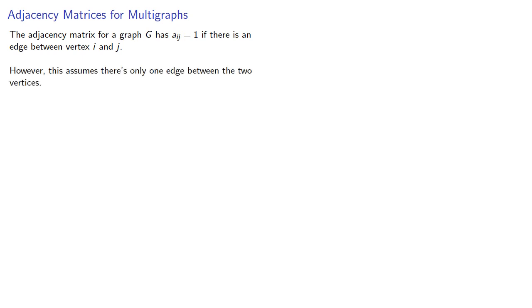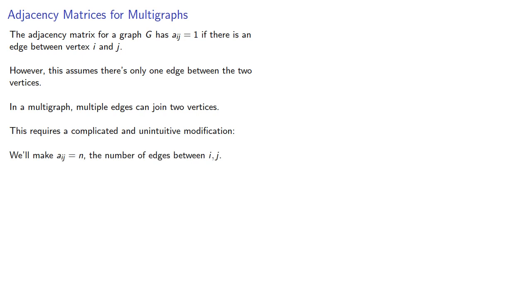However, this assumes there is only one edge between the two vertices. In a multigraph, multiple edges can join two vertices. This requires a complicated and unintuitive modification. We'll make A_ij equal to n, the number of edges between i and j.